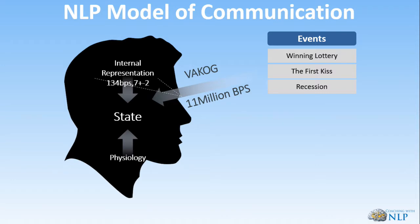When we distort, we attribute meanings to events based on our existing map — we make misrepresentations of reality, like seeing a rope and thinking it's a snake. Psychologists have identified various distortions: confirmation bias (paying more attention to evidence that supports our beliefs), the bandwagon effect, the illusion of control, and the halo effect — if we like one quality about a person, we tend to view their other qualities more favorably too.